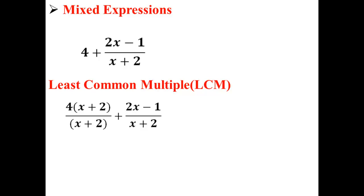So now we have 4 times x plus 2 divided by x plus 2 plus 2x minus 1 over x plus 2. This simplifies to 4 times x plus 2 plus 2x minus 1 all over x plus 2.